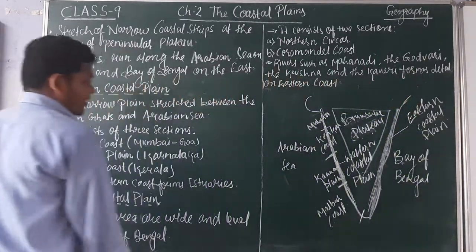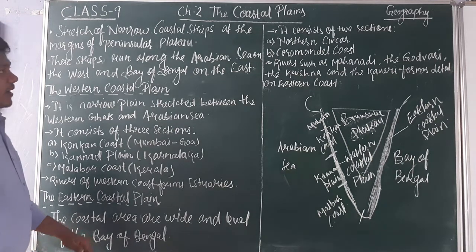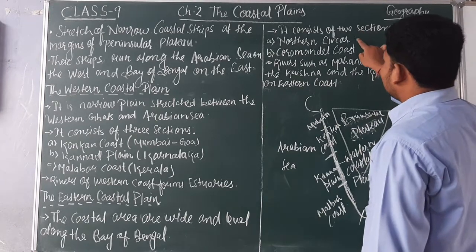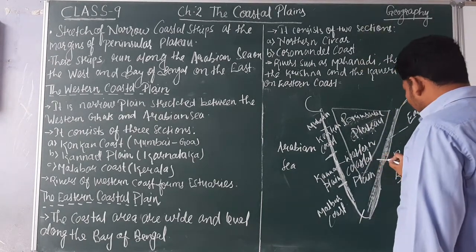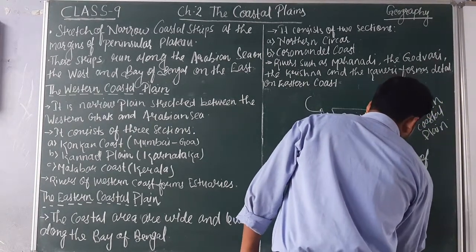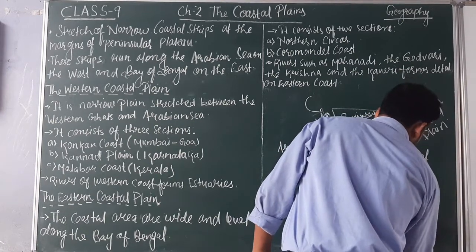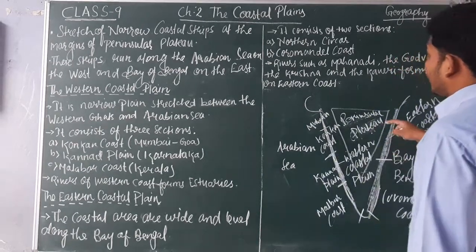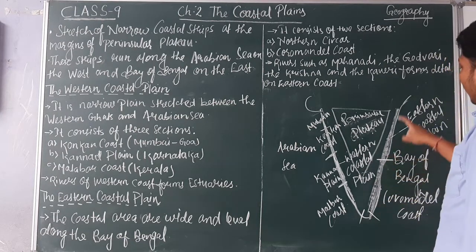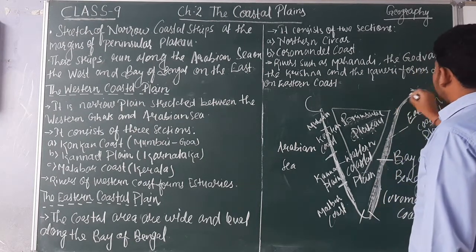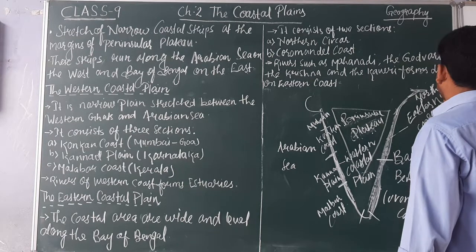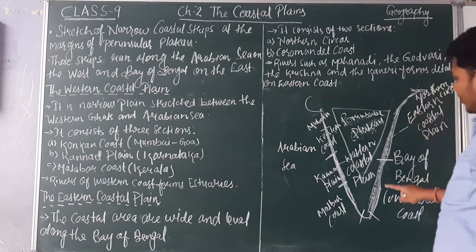The Eastern Coastal Plain is wider than the Western Coastal Plain. It consists of two sections. One is Northern Sirkars, and the other is the Coromandel Coast. The area along Andhra Pradesh is called the Coromandel Coast. These are the two major broad divisions of the Eastern Coastal Plain.